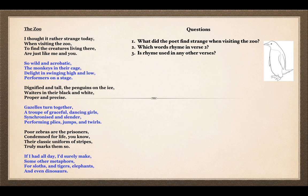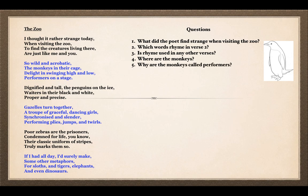In verse one, the rhyme takes place between line two and line four, but lines one and three do not rhyme — this is a structured poem. Question four: where are the monkeys? Monkeys is your key word — search for it and you'll find the correct verse. That's a literal question — look in verse two. Question five: why are the monkeys called performers? Think about what a performer does and why that applies to monkeys. Question six: color the penguin in based on what is written in the poem — look in verse three.